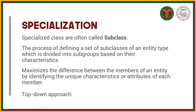The benefit of specialization is that it maximizes the difference between members of an entity by identifying the unique characteristics or attributes of each member. For example, with a superclass person, you can specialize a subclass student so that it is distinctly distinguishable from other types of person — different from a teacher, a driver, a doctor, and so on.